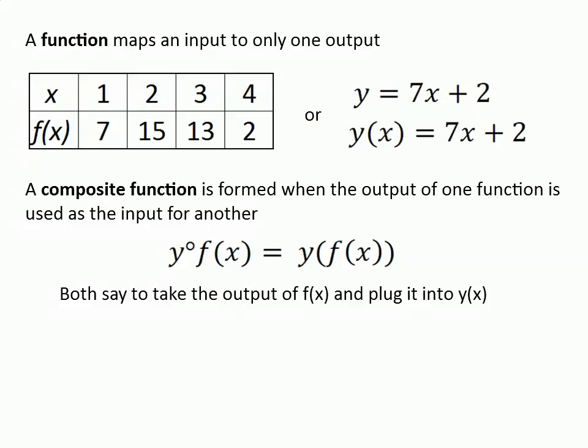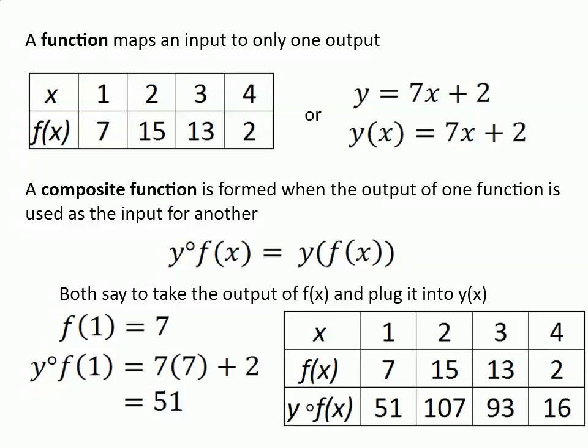Let's do that now for our functions f and y. You can see that on the table that when x is 1, f of x is 7. Plugging that 7 into y gives us 7 times 7 plus 2, which simplifies to 51. Doing this for our other values results in the table shown here. I have added the composed values y of f of x to the original table definition of f.